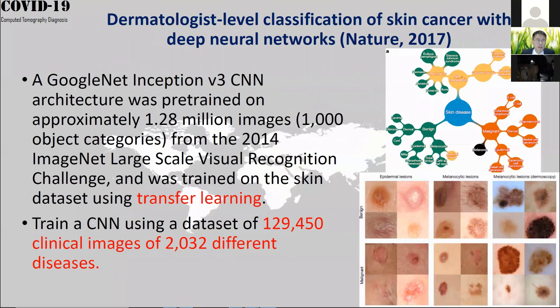Again, this uses a CNN network. First, the network is trained on a very large dataset called ImageNet with 1.28 million images. These are not clinical images — these are everyday objects like dogs, cats, and other things we see in daily life.